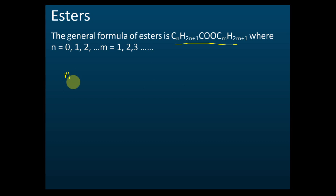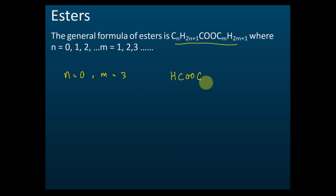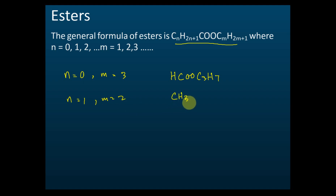For example, when n equals 0 and m equals 3, the formula becomes HCOO-C₃H₇. And when n equals 1 and m equals 2, it becomes CH₃COO-C₂H₅ — because CₙH₂ₙ₊₁ gives CH₃ when n equals 1, and that's the functional group COO, and then C₂H₅ when m equals 2. That's how we write the formula of an ester. You need to know the values of n and m in the molecule. The functional group is COO.